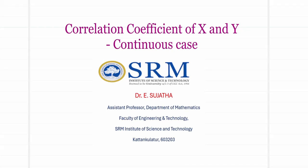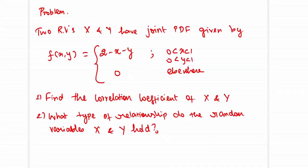Hello friends, welcome to this video on finding the correlation coefficient of the random variables X and Y. We are going to consider the problem in the continuous case, where X and Y are continuous random variables. The problem says the two random variables X and Y have a joint PDF given by f(x,y) = 2 - x - y for 0 < x < 1 and 0 < y < 1, and zero elsewhere. We are asked to find the correlation coefficient of X and Y, and also what type of relationship the random variables X and Y hold.